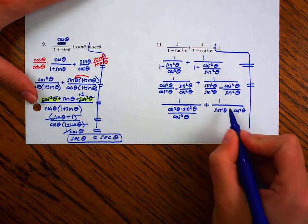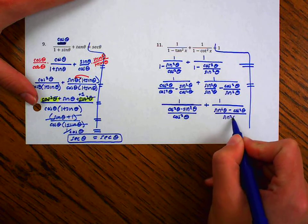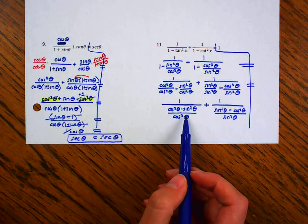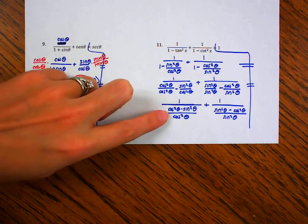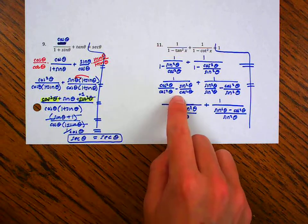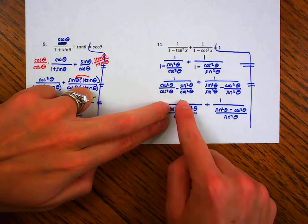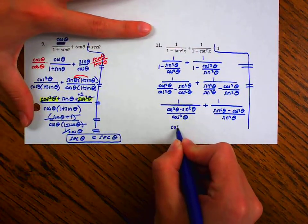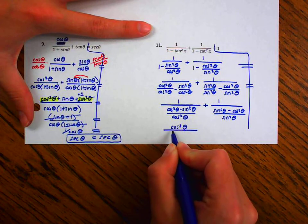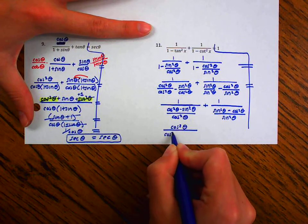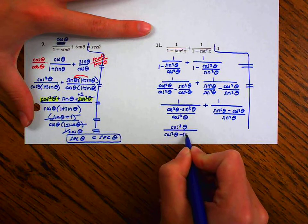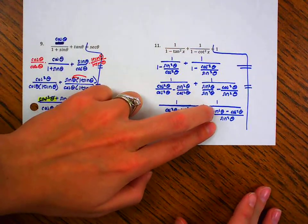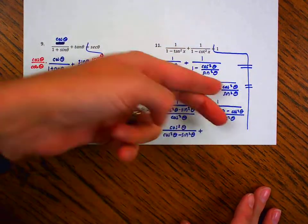So I'm just combining terms right now. Notice that these are my denominators. So one of the things that I can do is I have 1 divided by this fraction, which is the same as 1 times the reciprocal of this fraction. So I'm going to flip this. I'm going to have a cosine squared theta over cosine squared theta minus sine squared theta, plus, notice I have 1 divided by this fraction, so it's the same as 1 times the reciprocal of that fraction.